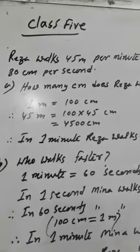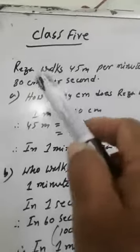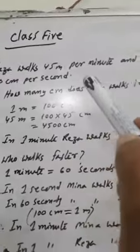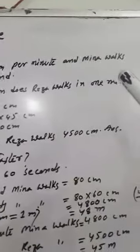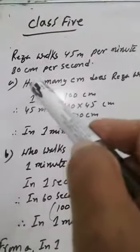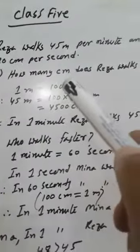Assalamu alaikum. This is Math for class 5. Raja works 45 meters per minute and Meena works 80 centimeters per second.